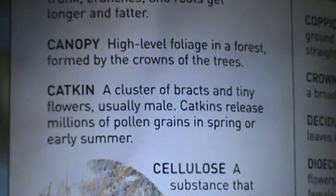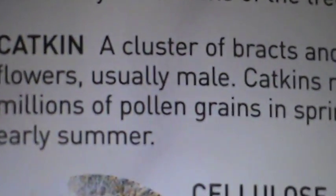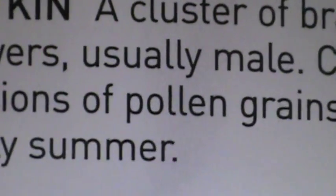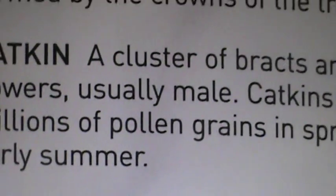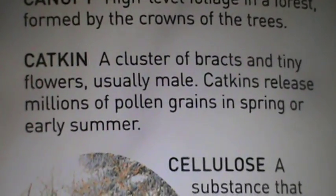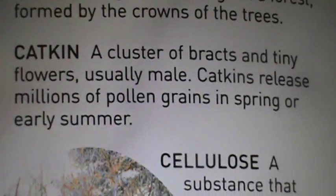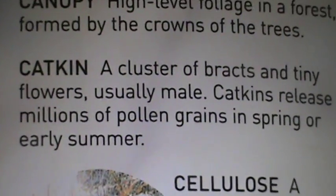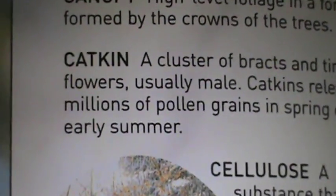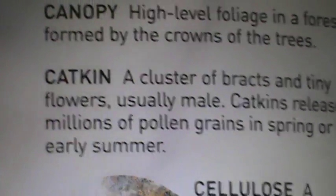So this is a real obvious one here, folks. Catkin equals father, and pollen equals Jesus. You can read for yourself what a catkin is. You see that the catkin is the source — the entity that releases millions of pollen grains in spring or early summer. So catkin equals father. Very glaring.